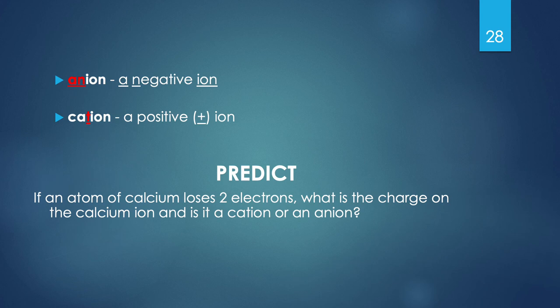Here's a great exam-type question: if an atom of calcium were to lose two electrons, what is the charge on the calcium ion and is it a cation or an anion? Quick note: anions are negative ions and cations are positive ions. Calcium is normally neutrally charged. If it loses 2 electrons, it now has fewer electrons than protons, making it more positive. So the charge is 2+ and it is a cation.